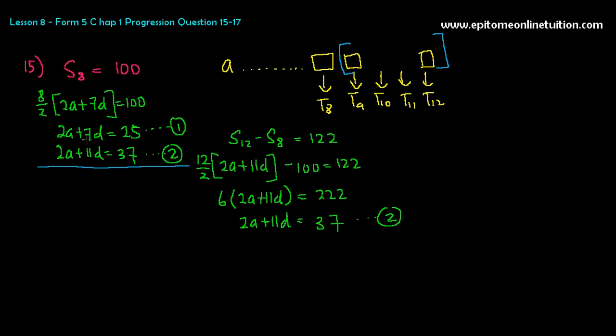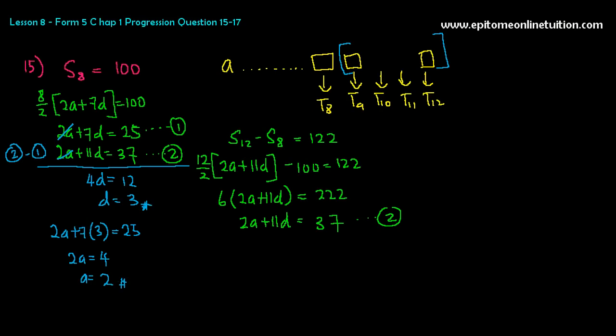And now, we shall eliminate using 2 minus 1. Why? Because 2 is bigger than 1, so it's easier to minus. You don't get a negative. 2A minus 2A, no more. 11 minus 7 is 4D. And 37 minus 25 is 12, so D is 3. D is 3, and now you have to find your A. And I'm going to substitute A into equation number 1 because it's a smaller number. So 2A plus 7D is 3 is equals to 25. So 2A is equals to 25 minus 21 is 4. And A is equals to 2. A is equals to 2. So D is 3, A is 2. And we are done with 15A. That's 15A.